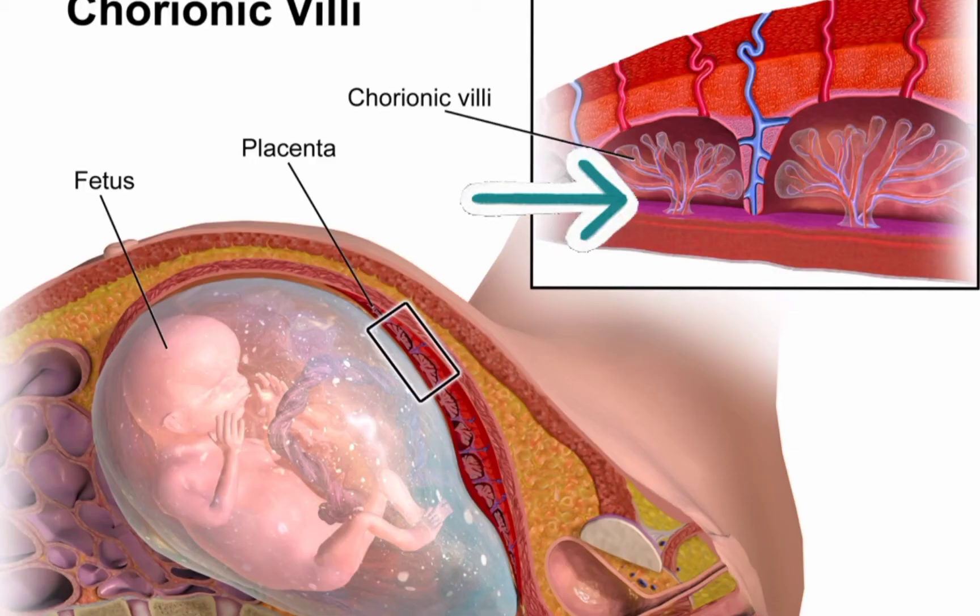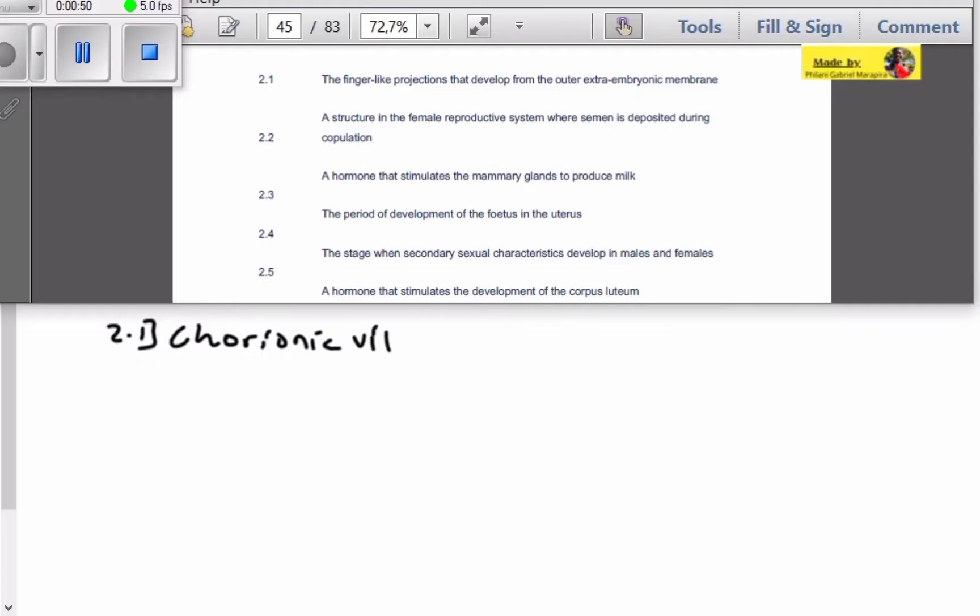So those membranes, we've got a chorion and an amnion. What membrane actually develops finger projections is the chorion. What are those finger-like projections called? It's called the chorionic villi. So these are your answers.